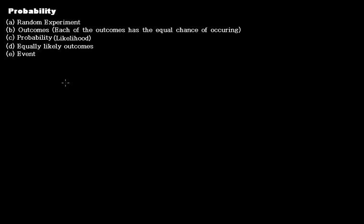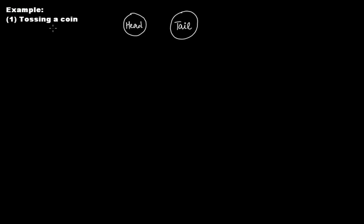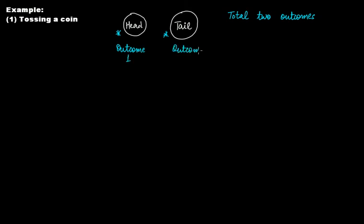Then comes outcomes. Each of the outcomes has an equal chance of occurring — this is related to probability and likelihood. In our two random experiments, let's talk about outcomes. For tossing a coin, the two outcomes are: you get head (outcome one) or you get tail (outcome two). So you have a total of two outcomes.